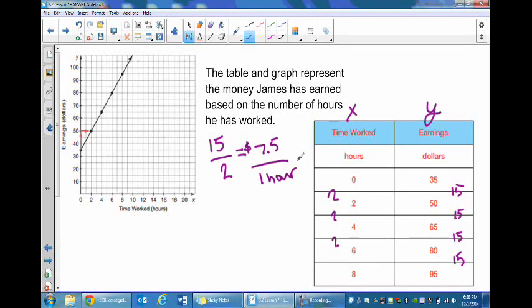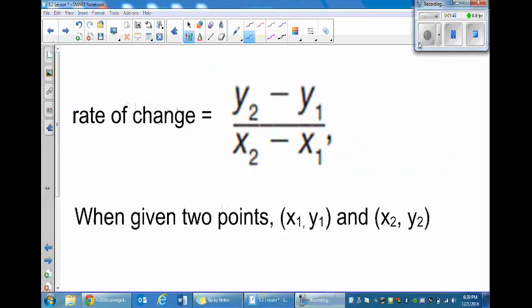After looking at just the first example, you might be able to tell that there is kind of a pattern that we can use when we look at tables to find the rate of change. There is a formula that is given to us to help: y2 minus y1 over x2 minus x1.